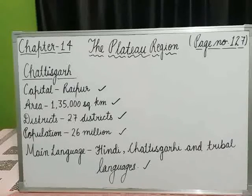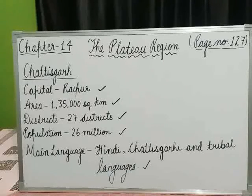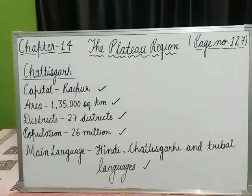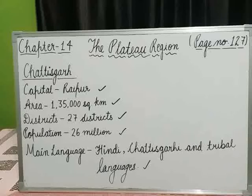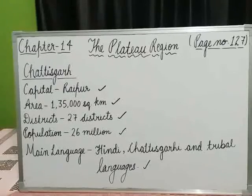Kailash and Kutumsar cave — Kutumsar is also known as Kutumsar cave — Kangir Valley National Park, Kavardha Palace, and Sirpur are famous tourist spots. Bilaspur, Korba, Durg, Rajgarh, Dantewara, and Rajnandgaon are important cities of the state.